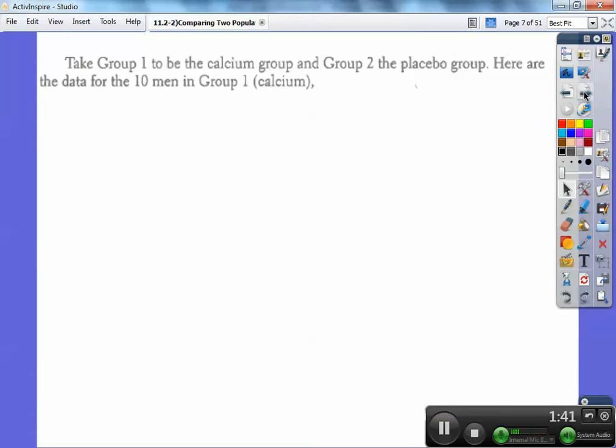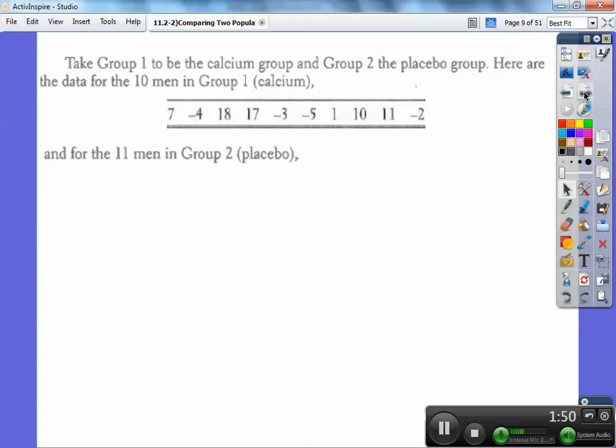Take group one to be the calcium group and group two to be the placebo group. So here's the two groups right here. Go ahead and enter those in list one right there and enter this in list two. Group one goes in list one, group two will go in list two in your calculator. Go ahead and do that.